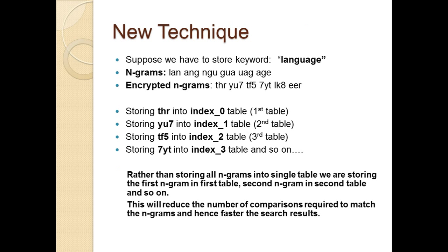Now let's see the new technique we have used to improve search results. Suppose we store the keyword 'language' — the n-grams will be: lan, ang, ngu, gua, uag, age. The encrypted n-grams might be something like thryu7, tfn, and so on. Rather than storing all n-grams in a single table, we store the first n-gram in the first table (index 0), the second n-gram in the second table, the third in the third table, and so on. This reduces the number of comparisons required to match the n-grams and therefore speeds up the results.